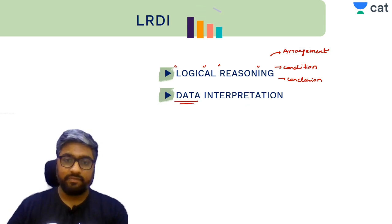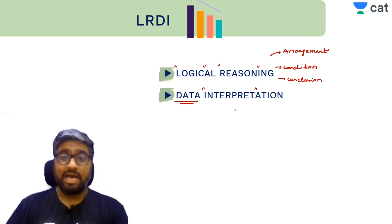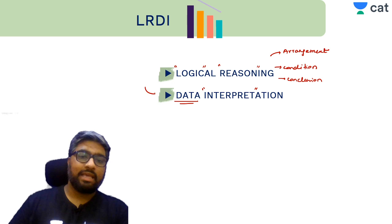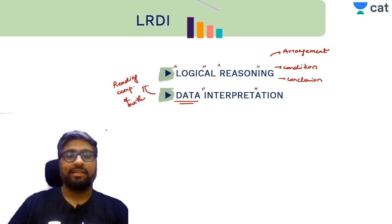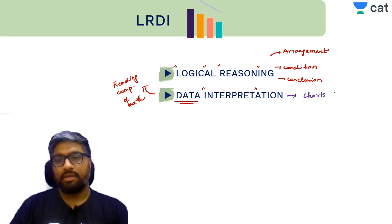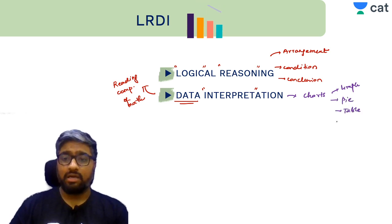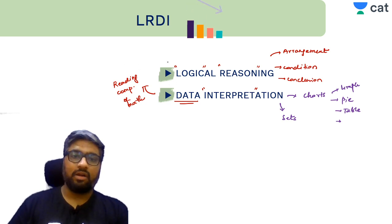Data Interpretation: a set of data is given to you and you have to interpret it — understand, grasp, and analyze it. Once you analyze, there will be questions based on this. So data interpretation is the reading comprehension of math. Questions come in the form of charts — bar graphs, line graphs, pie charts, tables, scatter graphs — and also information given in terms of sets and Venn diagrams. All these fall under LR and DI.